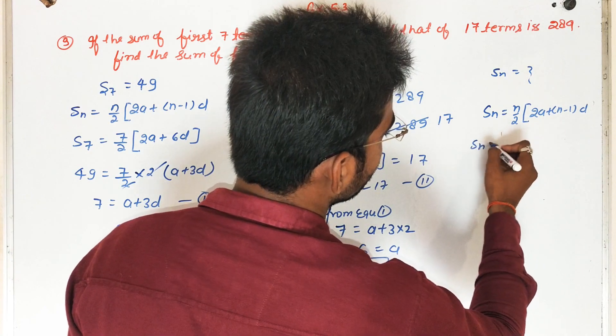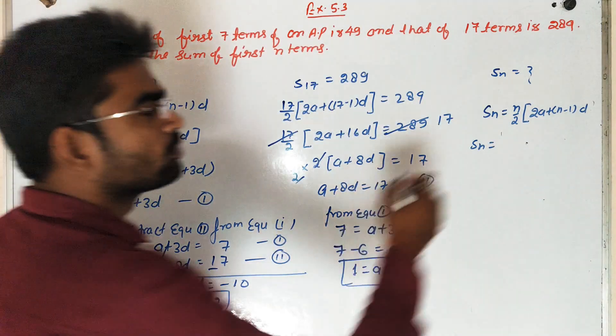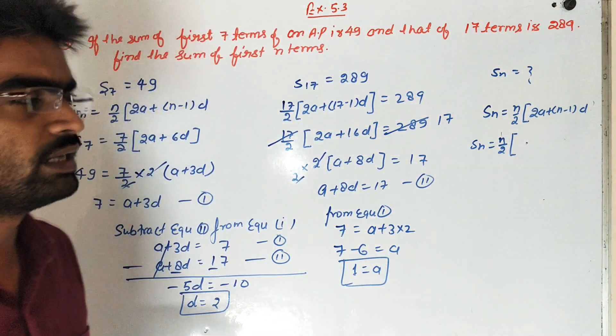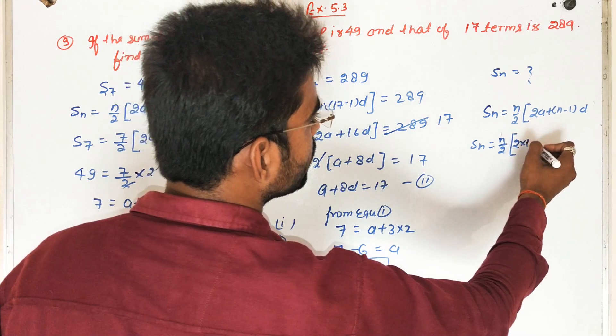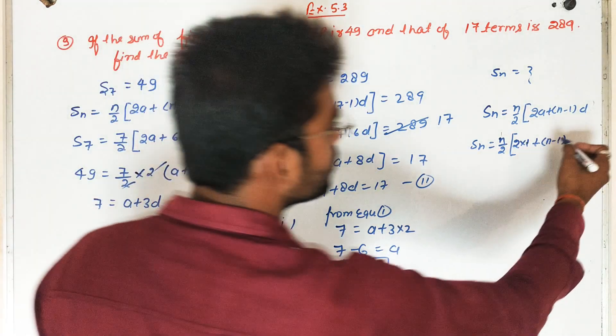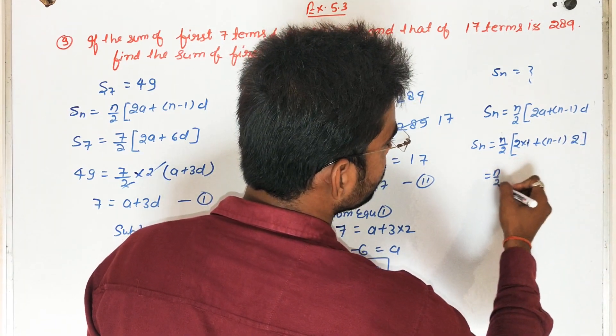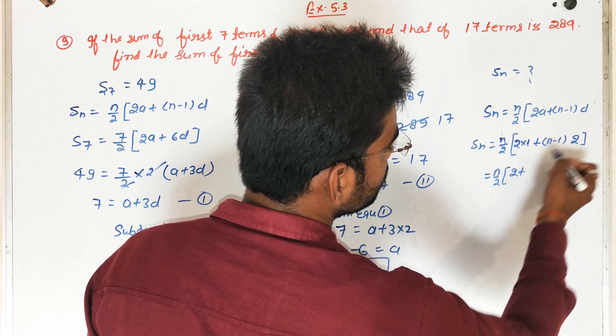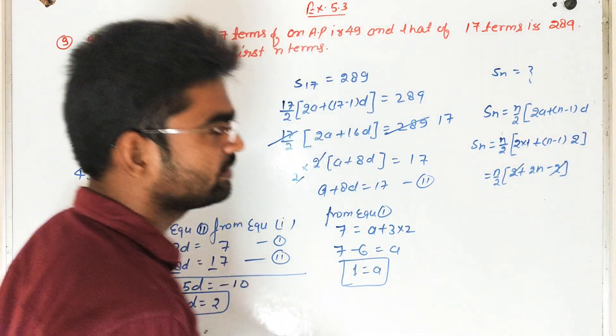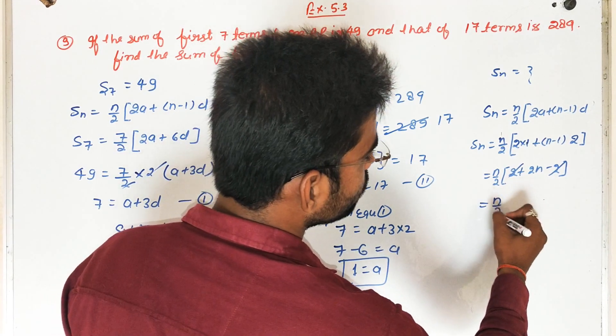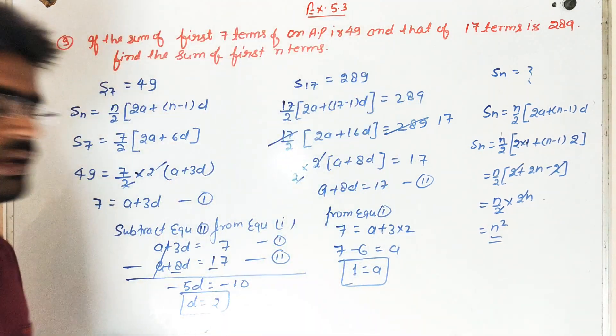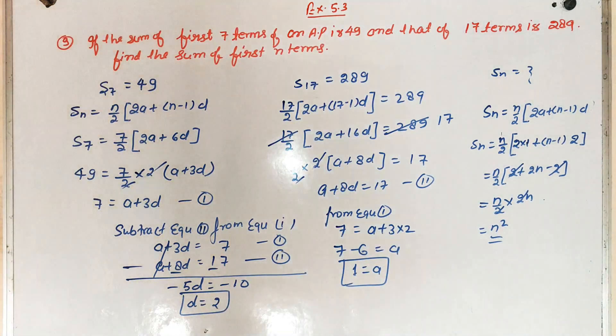Students, substituting the values, N upon 2 into 2A plus N minus 1 into D, which simplifies to N square students, okay.